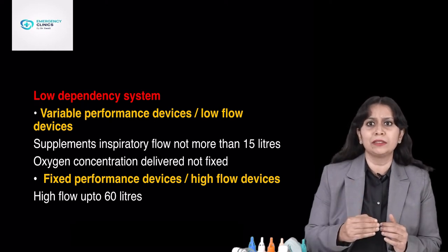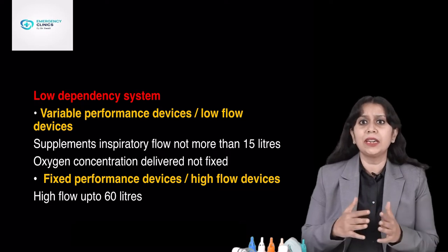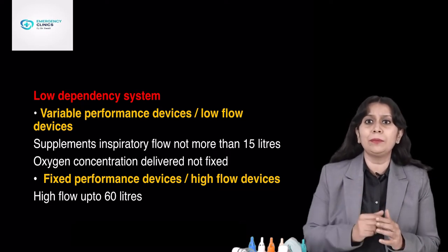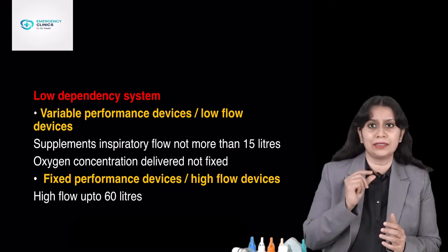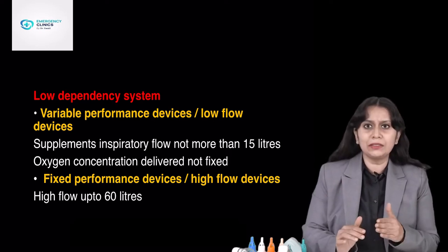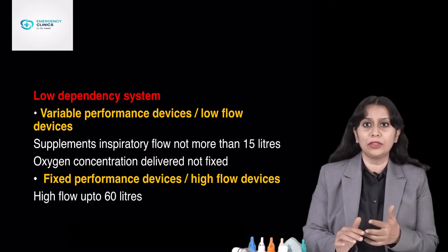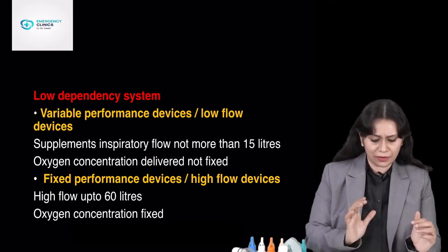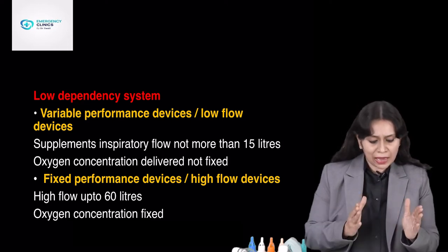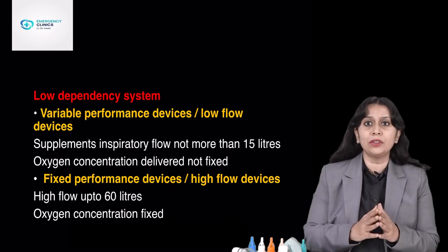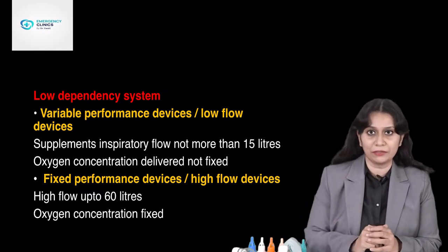When is the inspiratory time less? When the respiratory rate is very high. If the respiratory rate is very high, for every breath, the time would be less, and for inspiration even less time. So when the patient has a high flow requirement, high flow devices would be useful. These devices can deliver flow up to 60 liters per minute, and in them the oxygen concentration is fixed — I can give a fixed FiO2. This is the benefit.